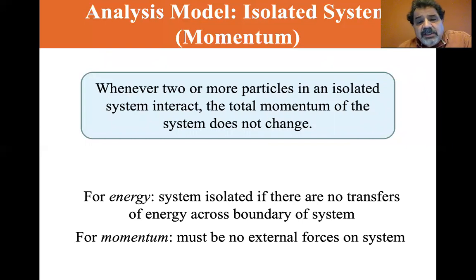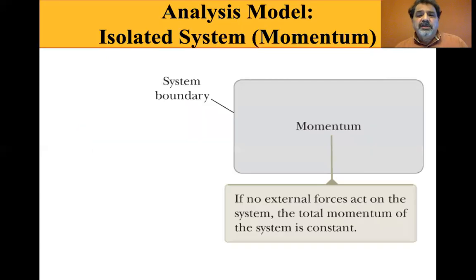For energy, the system is isolated if there are no transfers of energy across the boundary system. Remember we talked about boundaries and the different ways that items move in and out of the boundary. For momentum, there must be no external forces on the system. So for energy there's no transfer in and out of the system, and for momentum there must be no external forces on the system.